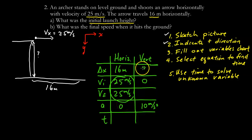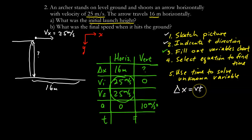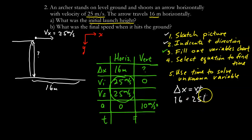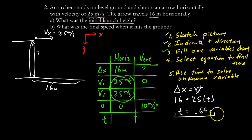We're looking for the launch height, so I put a question mark for vertical displacement. Time is equal for both directions. I have enough information to find time from the horizontal motion using the constant velocity equation: delta x equals v times t. So 16 equals 25 times t, giving t equals 0.64 seconds. I'll record that in the chart.